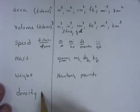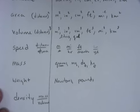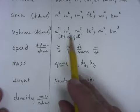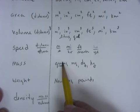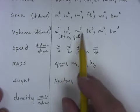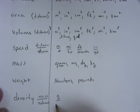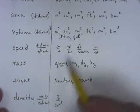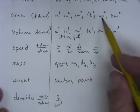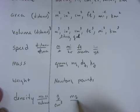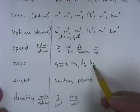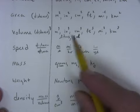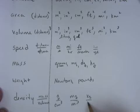And density is any mass divided by any volume. So any mass divided by any volume. So let's pick a couple. Let's say grams per centimeter cubed. That's a real common one. How about milligrams per mile cubed. How about kilograms per cubic inch. Okay. So any mass divided by any volume.